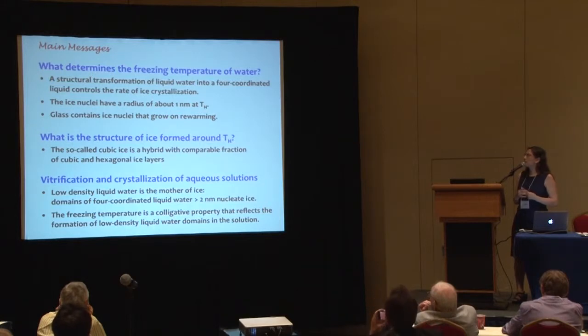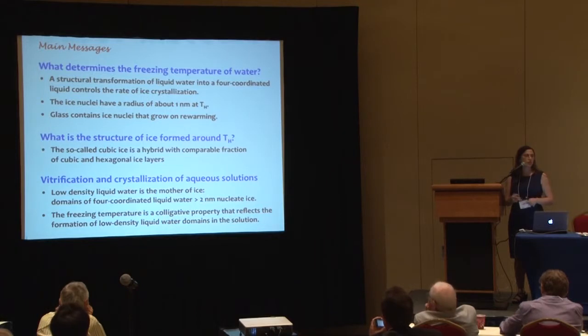With this expression we can represent very well the freezing line, and this is the underlying reason why the freezing temperature depends on the water activity of solutions. To conclude: what determines the freezing temperature of water is a structural transformation within the liquid that transforms it into a four-coordinated liquid. This four-coordinated liquid has a very small gap with respect to the crystal, so nucleation is very fast, and growth becomes the limiting step for crystallization. The ice nuclei are very small — about one nanometer radius — consistent across experiments, simulations, and classical nucleation theory.